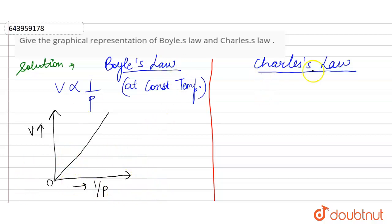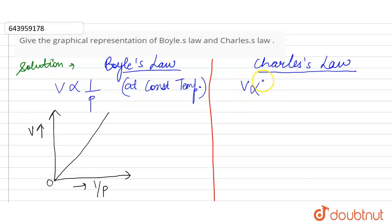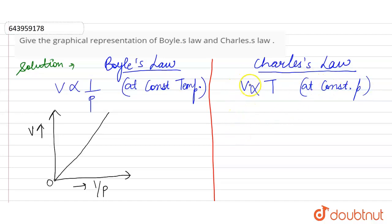Now, Charles' law. According to Charles' law, volume is directly proportional to temperature at constant pressure. Hence, if we increase volume, the temperature also increases.